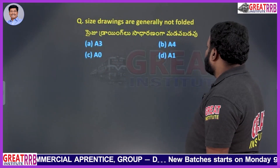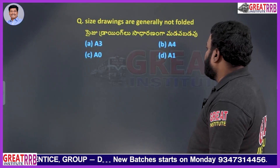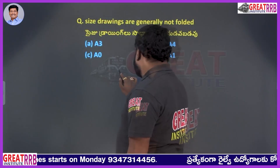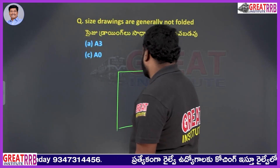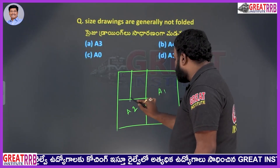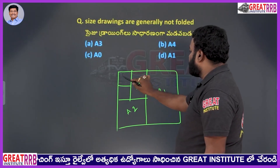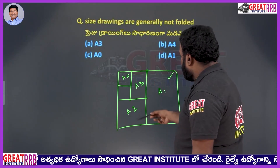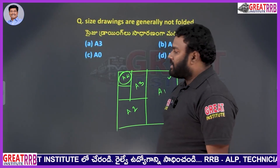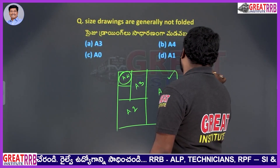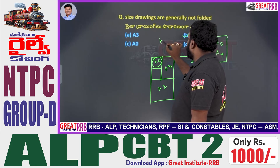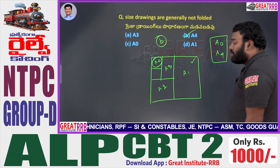Which size drawings are generally not folded? A A3, B A4, C A0, D A1. The original drawing sheet size is A0. Halving A0 gives A1, halving A1 gives A2, halving A2 gives A3, and halving A3 gives A4. Folding A4 would give A5, which is outside standard sizes. So option B, A4, will be the right answer — A4 size drawings are generally not folded.